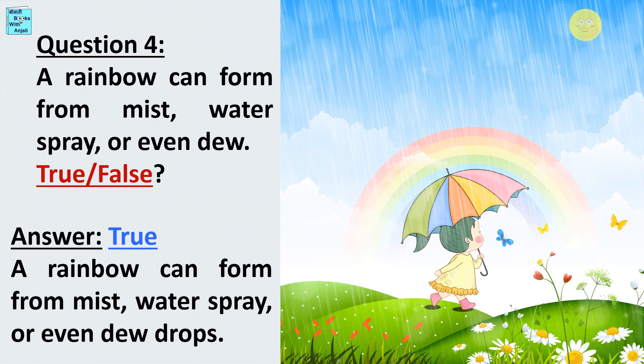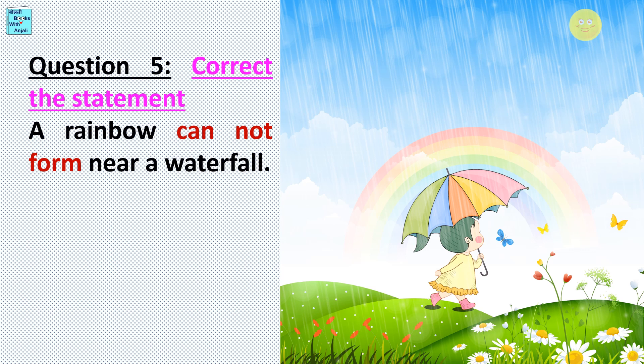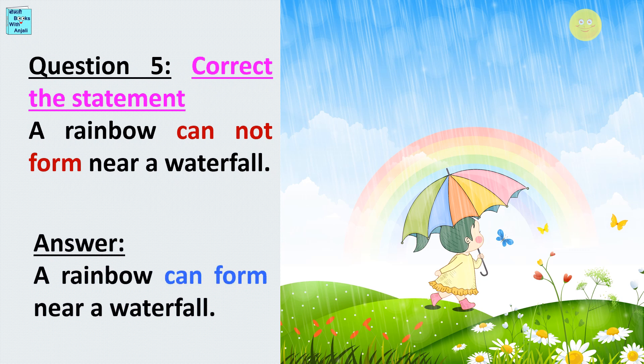A rainbow can form from mist, water spray, or even dew drops. Last question. Question 5: Correct this statement — a rainbow cannot form near a waterfall. Answer: A rainbow can form near a waterfall.